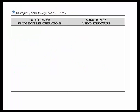Hi scholars, today we're going to start by solving a simple two-step equation, 4x minus 3 equals 25.